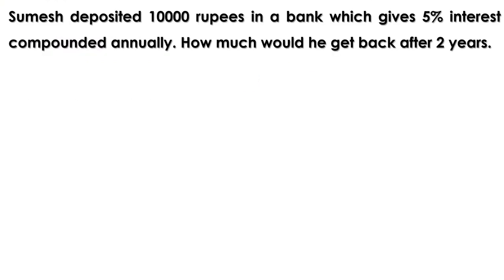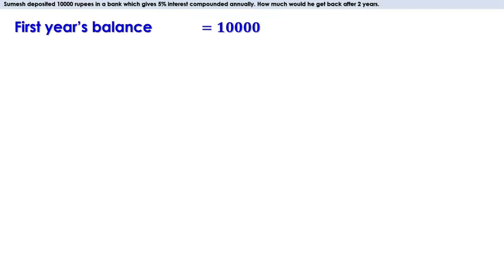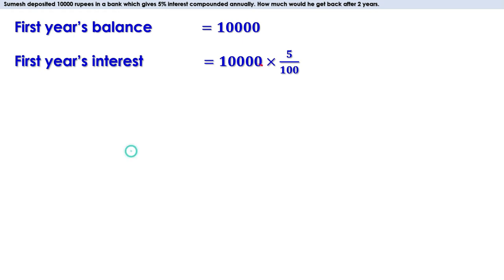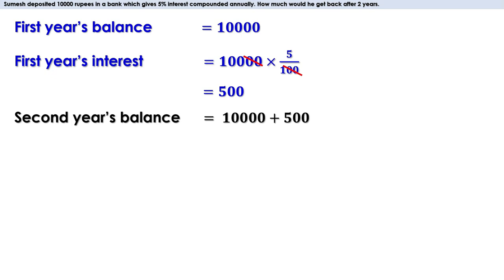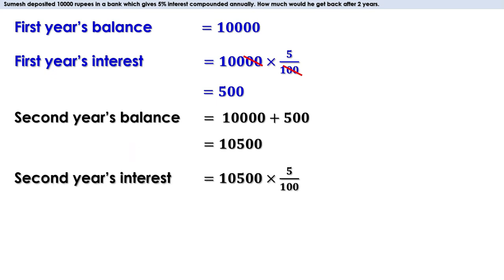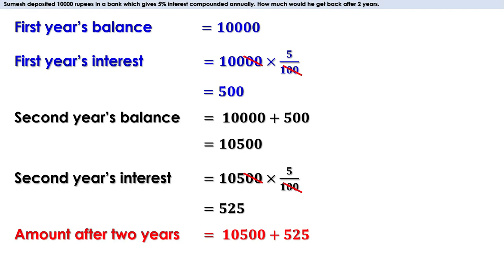Now let us learn the next section — another method. Consider the previous video's problem again. First year's balance is 10,000 rupees; first year's interest is 500 rupees. Second year's balance is 10,500 rupees; second year's interest is 525 rupees. The amount after two years is 10,500 + 525 = 11,025 rupees.